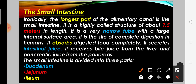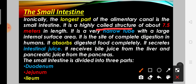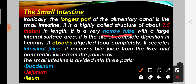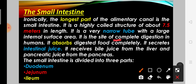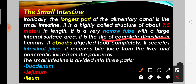The small intestine is the longest part of the alimentary canal. It is a coil structure, 7.5 meters in length. It is a very narrow, thin tube-like structure. The small intestine is the site of complete digestion in humans — it is where food is completely digested.